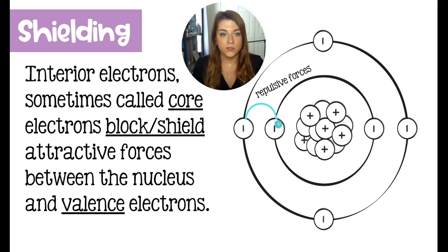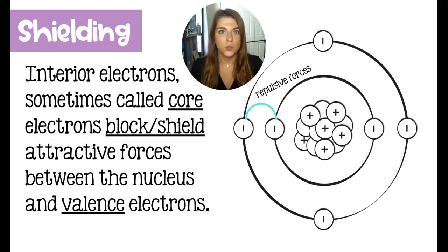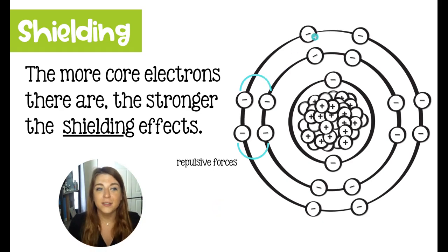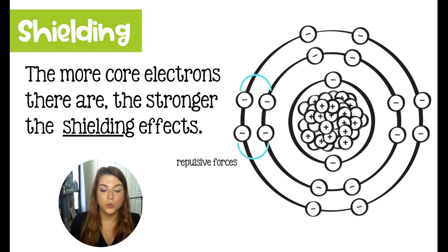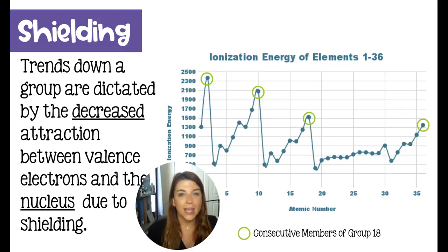Additionally, we have repulsive forces. The larger your atom is, the further away your valence electrons are from the nucleus, which decreases attraction overall. Plus, the more interior electrons you have, the more repulsive forces you have, which diminishes attractive forces. So not only are interior electrons going to shield outer electrons from the attraction of the nucleus, but electrons in the same energy level can shield each other from their attraction to the nucleus.